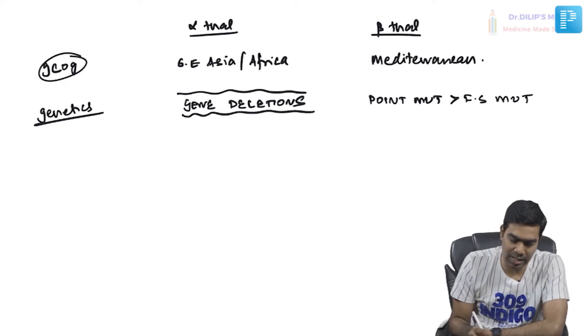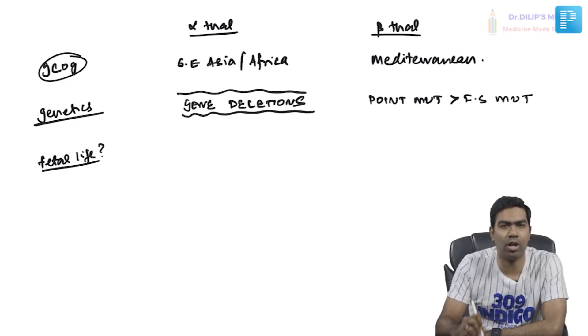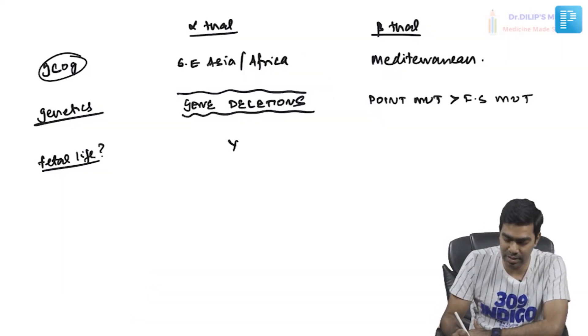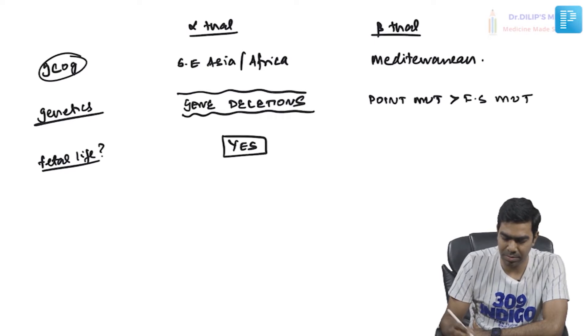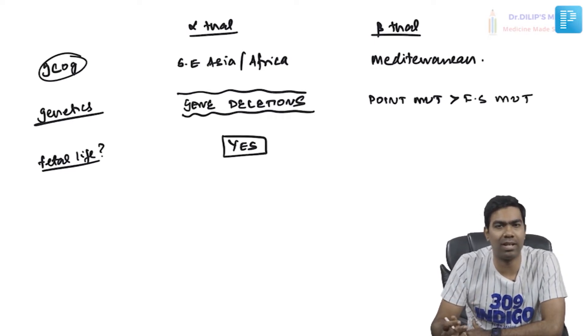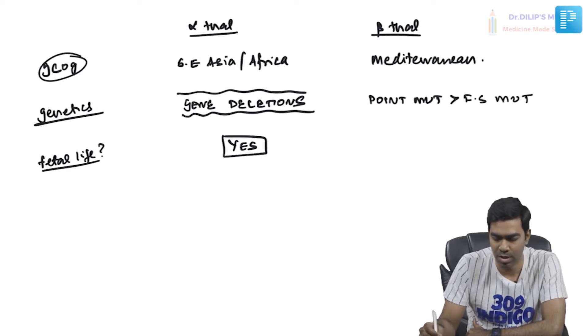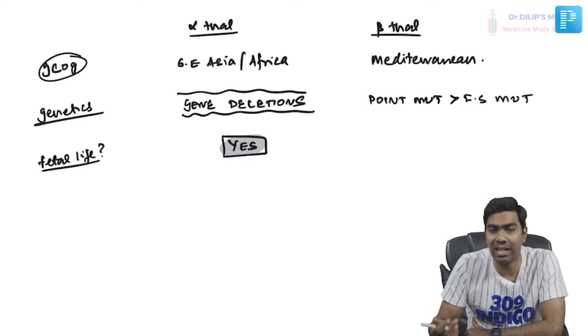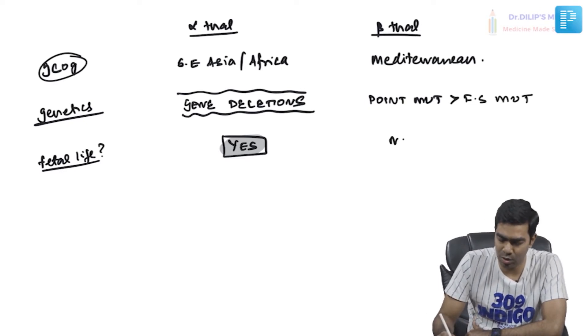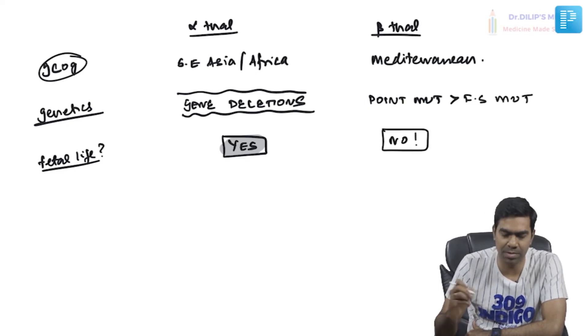Can thalassemias present in fetal life? Not all do, but certain types can. Can alpha thalassemia present in fetal life? Yes, certain types — specifically all four gene deletions of alpha thalassemia. But if you ask whether beta thalassemia can present in fetal life, the answer is no. They absolutely cannot present in fetal life.